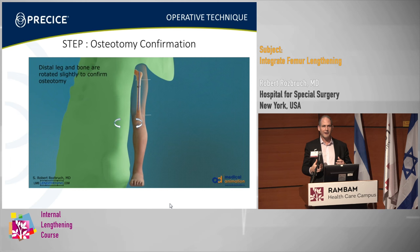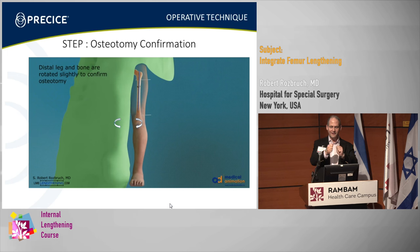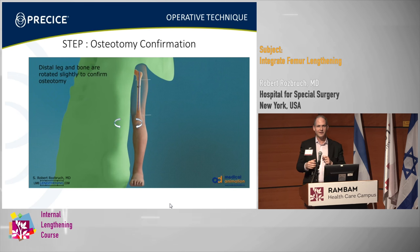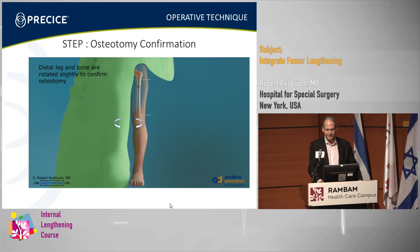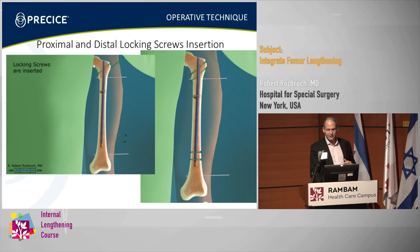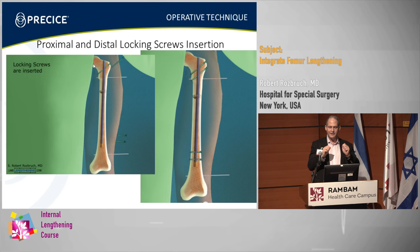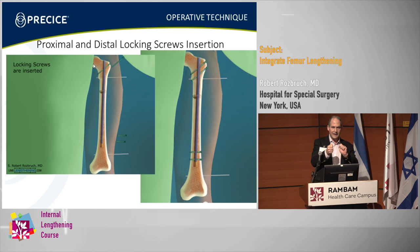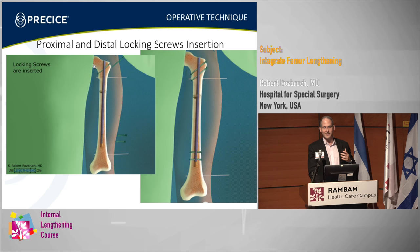It actually works best with a piriformis nail because then it's truly straight. You get a very nice feeling of that rotation — the same feeling we get when we take the two rings of the Ilizarov frame and rotate. Then locking screws are inserted. I prefer to do the distal ones first, because I try to make my rotation perfect, but it allows me that if I need to do a little residual rotational correction, I can do it after the distal ones are in, then put the proximal ones in easily with the jig.